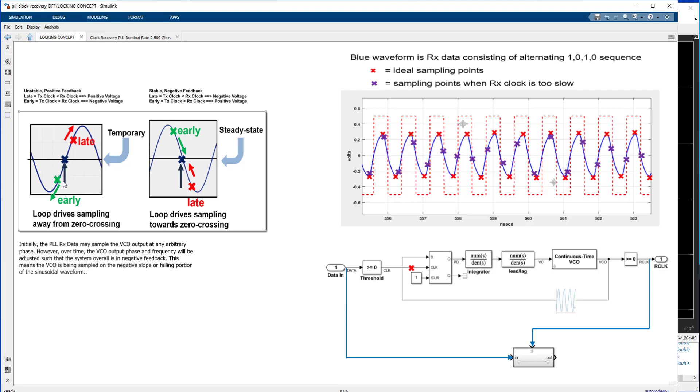Likewise, if we're sampling here on the early side, that means the TX clock is faster than the received clock. It's going to generate a negative voltage, which is going to slow down the VCO even more. So there's going to be even more disparity between the VCO rate and the received data rate. Fortunately, because it's unstable, it's going to drive this point over the hump of the sinusoidal waveform into the stable region, the stable negative feedback portion.